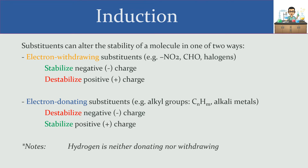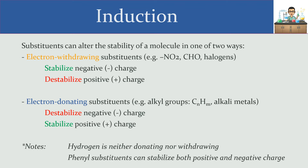A few notes here: hydrogen is neither donating nor withdrawing — if we attach a hydrogen to a carbon, it really doesn't do much in terms of helping positive or negative charges. Phenyl substituents, on the other hand, can be stabilizers in both situations, interestingly. That's because a phenyl ring provides a good amount of resonance, and resonance can stabilize both positive and negative charge.